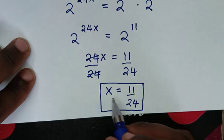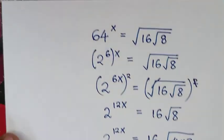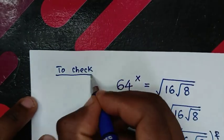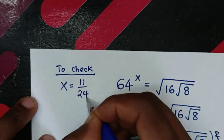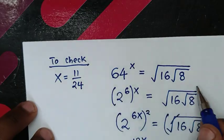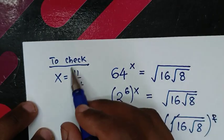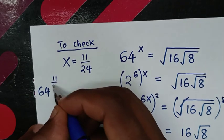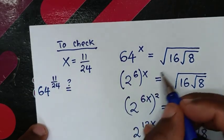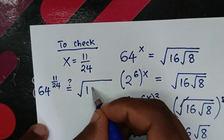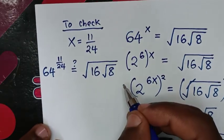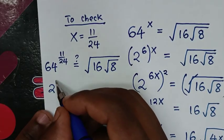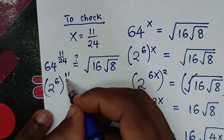Now, to check if this answer is correct, we substitute x equals 11 over 24 back into our original problem. So we have 64 to the power of 11 over 24. Since 64 equals 2^6, this becomes (2^6) to the power of 11 over 24, which equals 2 to the power of 6 times 11 over 24, simplifying to 2^(11/4).